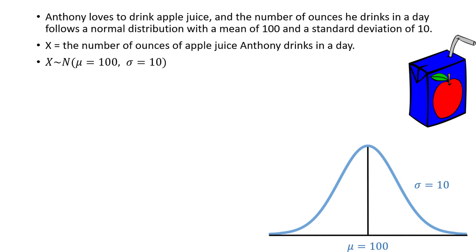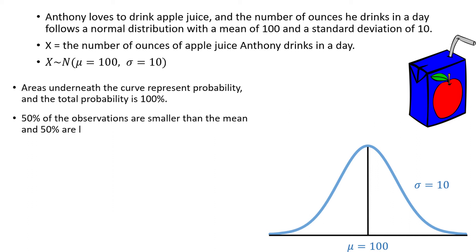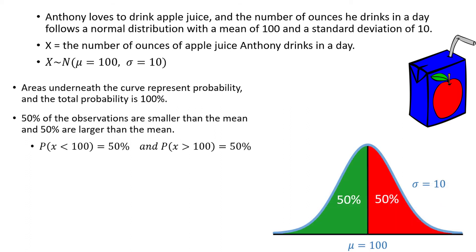Here is the distribution of Anthony's daily apple juice consumption. Let's briefly talk about some useful things to remember when calculating probabilities using the normal distribution. Areas underneath the curve represent probability, and the total probability is equal to 100%. In a normal distribution, 50% of the observations are smaller than the mean, and 50% of the observations are larger than the mean. So the probability x is less than 100 is 50%, and the probability x is greater than 100 is also 50%, as 100 is the mean.